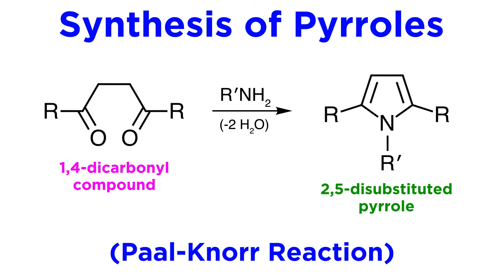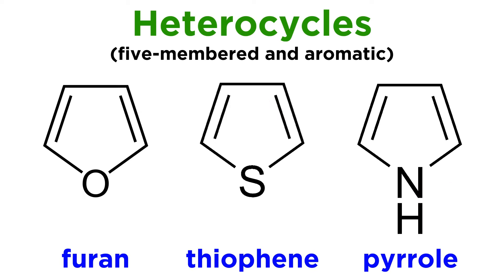And finally, pyrroles can be synthesized by the Paal-Knorr scheme we have outlined twice now, using primary amines or ammonia as the source of the nitrogen atom. So with that we have covered three very important five-membered aromatic heterocycles: furan, thiophene, and pyrrole. Let's move forward and take a look at just one more heterocycle with some slightly different properties.